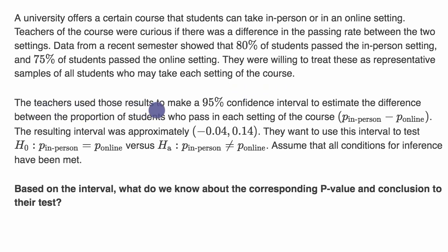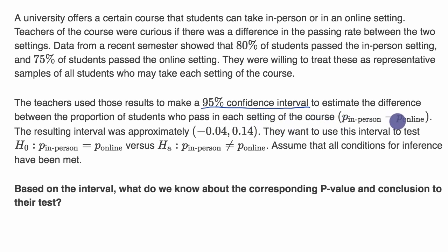The teachers used those results to make a 95% confidence interval to estimate the difference between the proportion of students who pass in each setting of the course — specifically the difference between the proportion who pass the in-person course and the online course. The resulting interval was approximately negative 0.04 to 0.14.